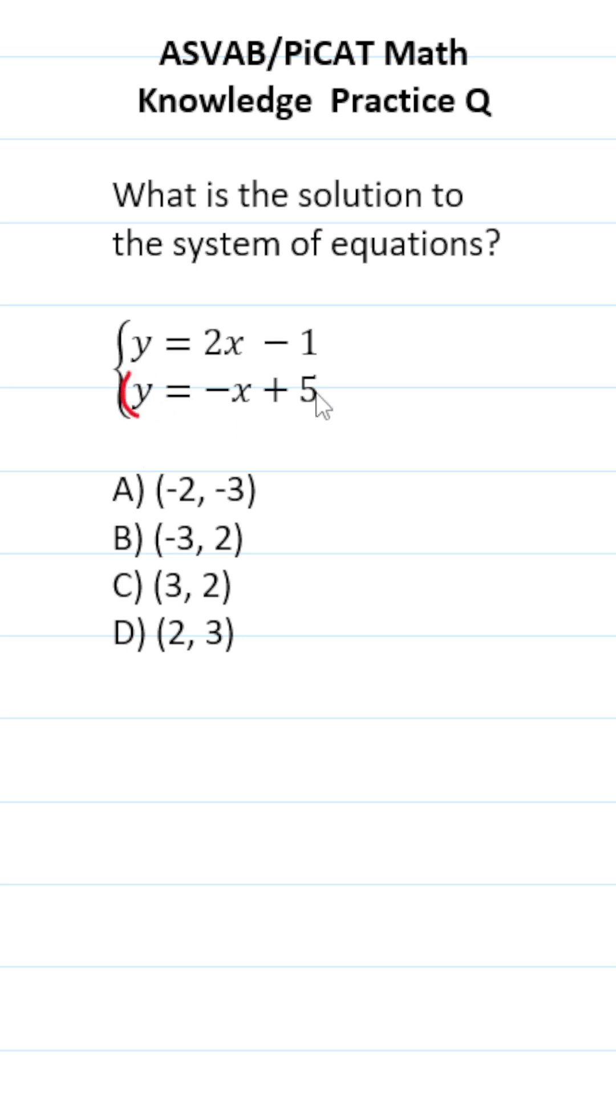I'm going to take this bottom equation and multiply it by positive 2. We're going to take that 2 and multiply it to each term here, here, and here. 2 times y is 2y equals 2 times negative x is negative 2x. 2 times 5 is positive 10.